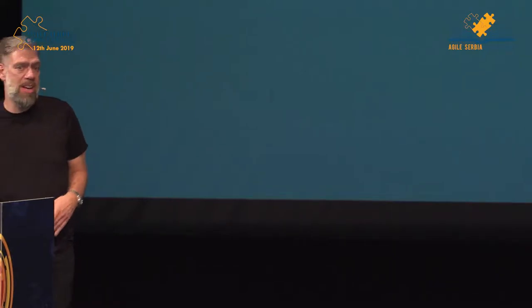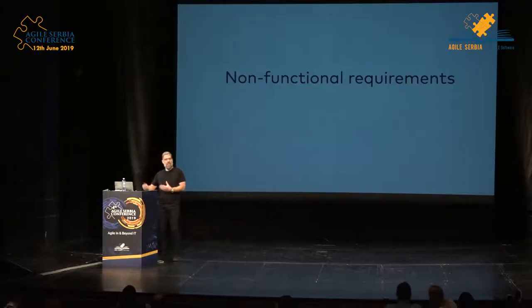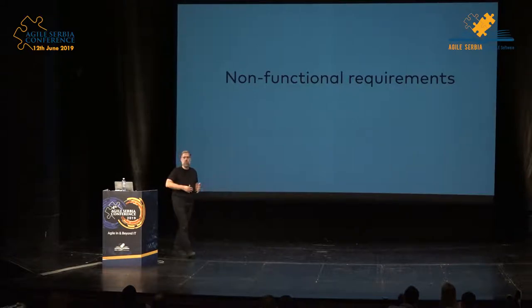That, to me, differentiates academic software development — where it's really about showing an idea works — from actual production software development, where you have to care about non-functional requirements. I hate the term 'non-functional' because nobody wants their software to not function, but it's still the standard way to talk about those things. They're all the things a non-technical person assumes: the 'ilities' — stability, testability, maintainability, scalability — quality attributes that don't have to do with the function of your program but with how well it's built.